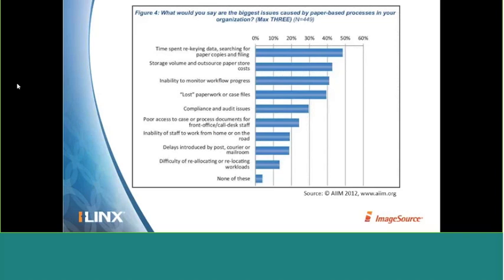Business process visibility, or lack thereof, is also a huge problem in a paper form process. When a customer calls in to inquire about the status of their application, tracking down their specific piece of paper across some number of desks can be very painful. Another AIIM statistic suggests that you'll lose about 11% of your paper content. Additional challenges from our experience include security — securing a piece of paper as it travels from desk to desk — and corrections, where tracking down the person who filled out a form with missing or wrong information is very costly and time-consuming.